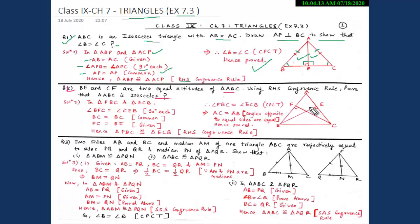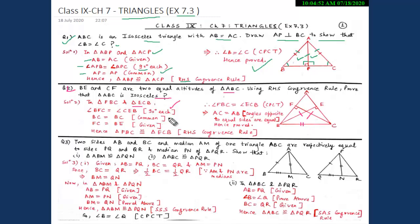First we will draw a triangle ABC in which two altitudes BE and CF are equal. We will consider two triangles — triangle FBC and triangle ECB — and prove they are congruent. Angle BFC is equal to angle CEB; they are both 90 degrees each, since BE and CF are altitudes. Side BC is common in both triangles, and FC is equal to BE, which is also given.